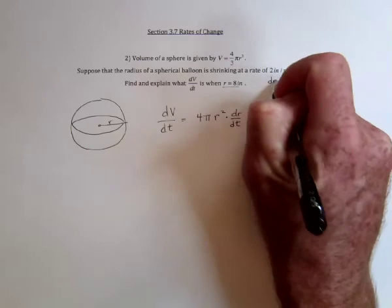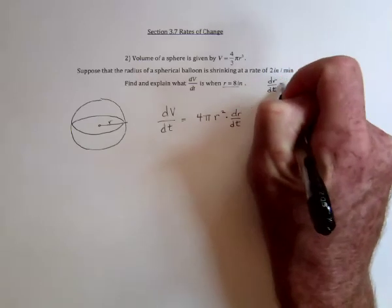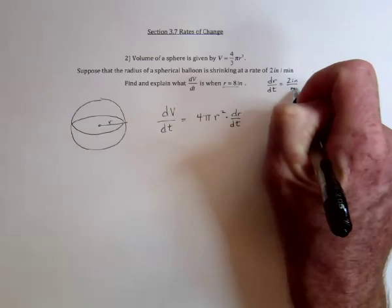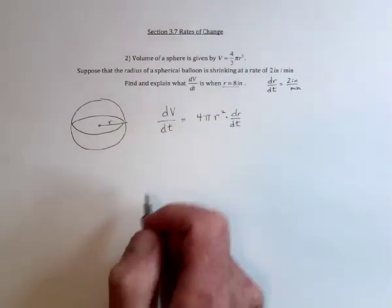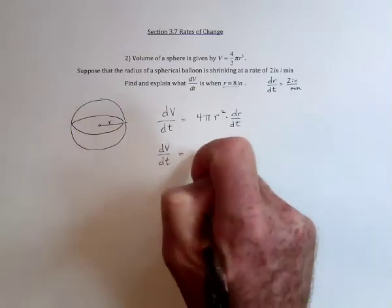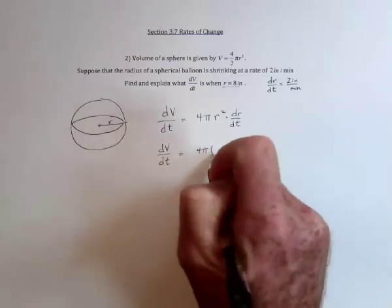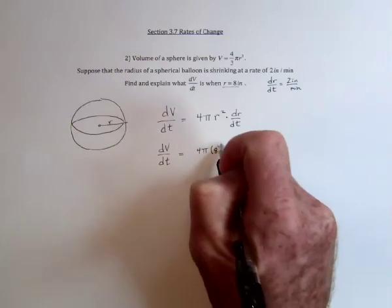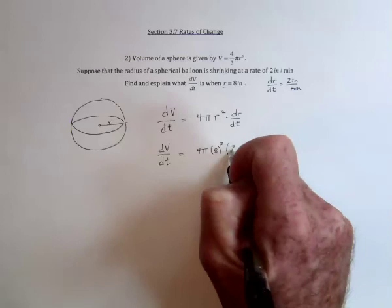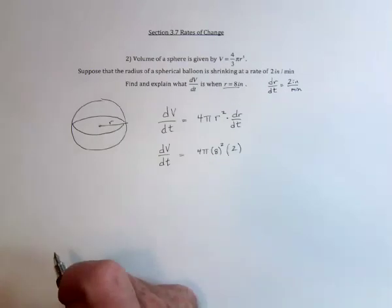So you've got dr/dt equals 2 inches for every 1 minute. So we'll have the change in the volume with respect to time, substitute an 8 for the r, and a 2 for dr/dt.